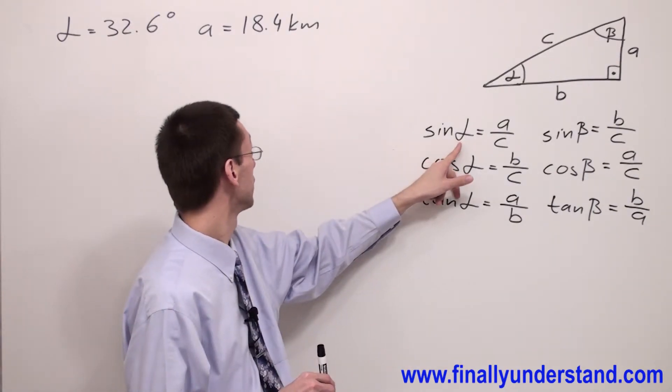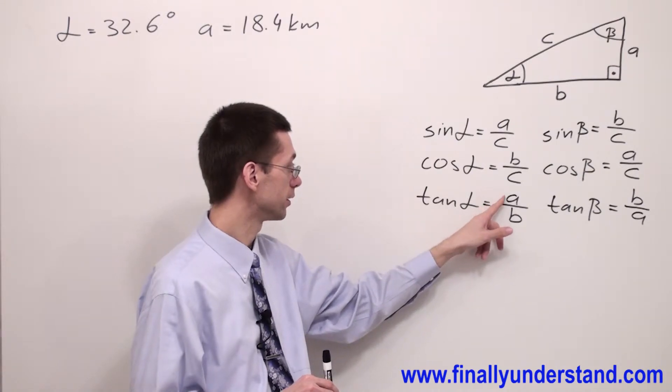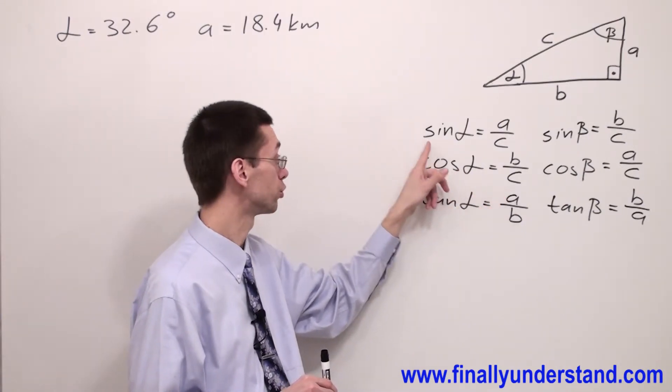We have alpha given and side A, so we can use two formulas.